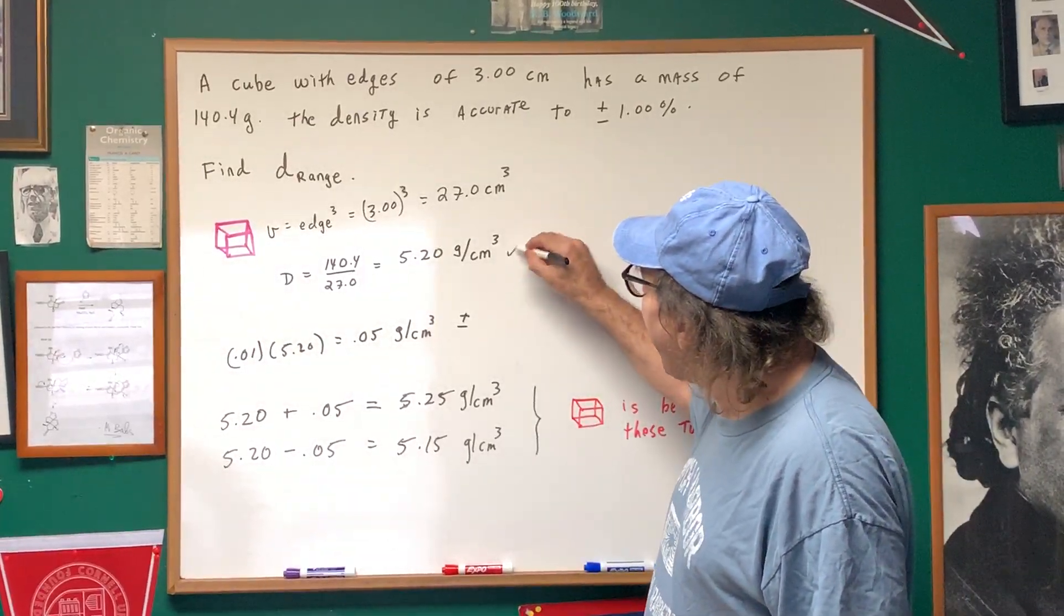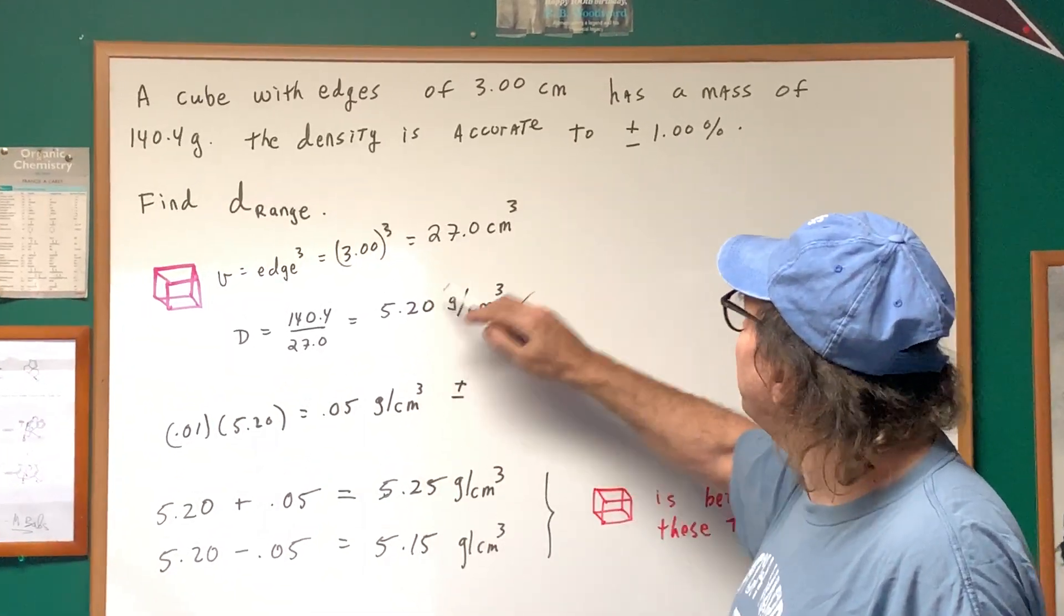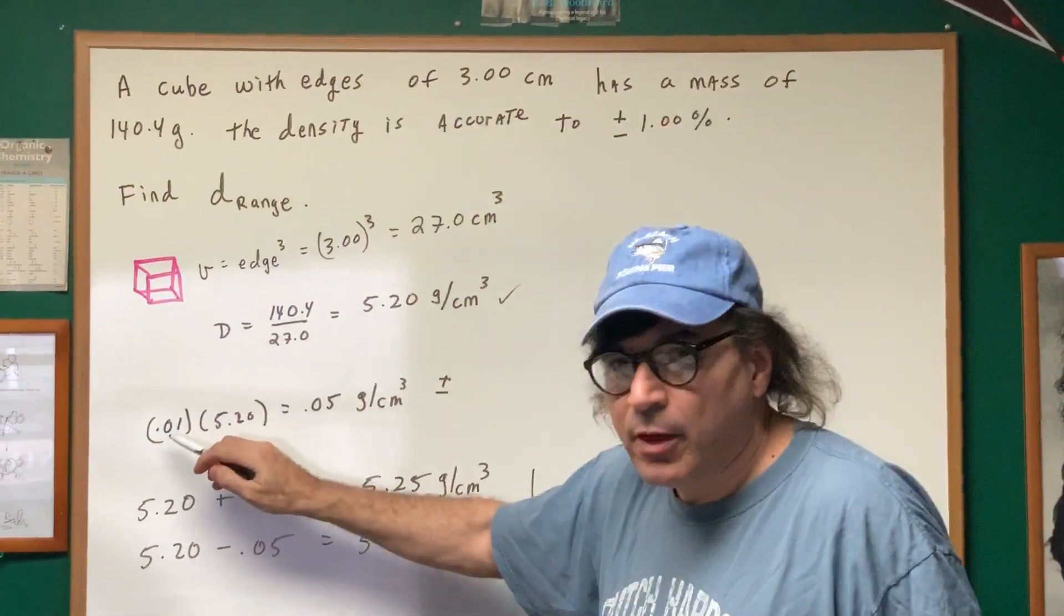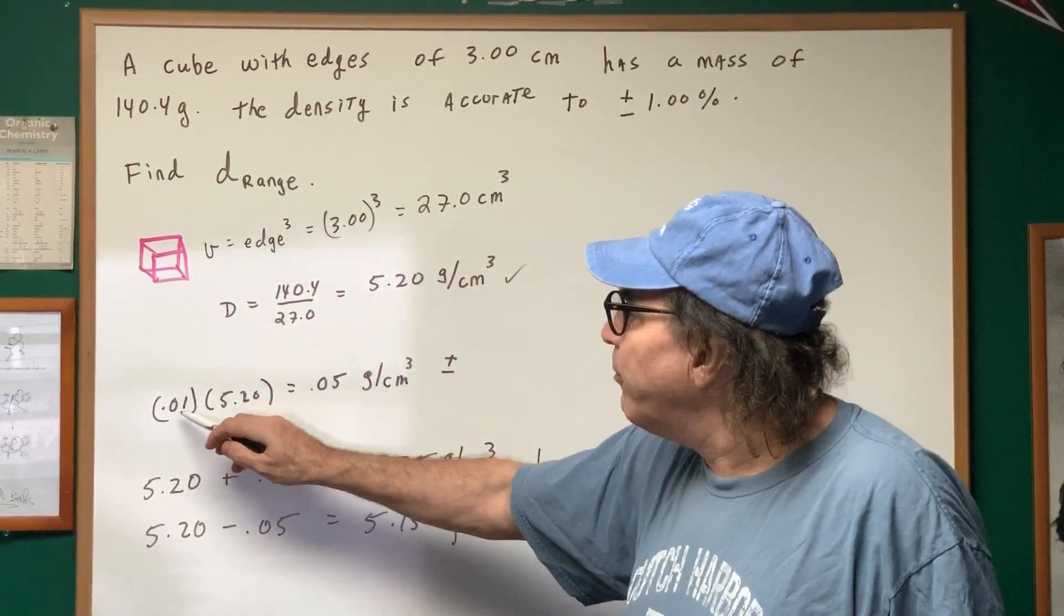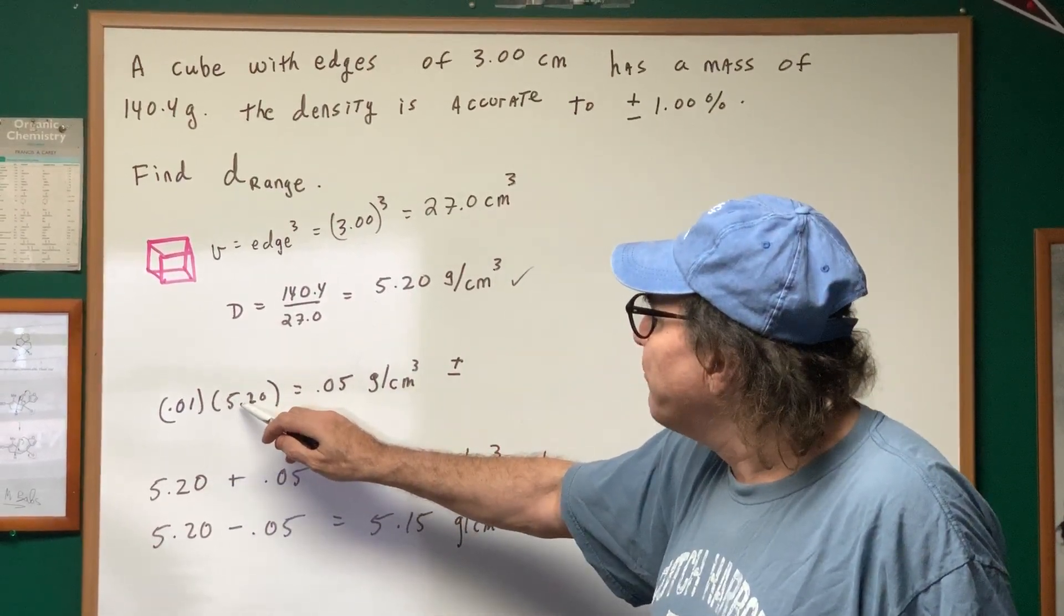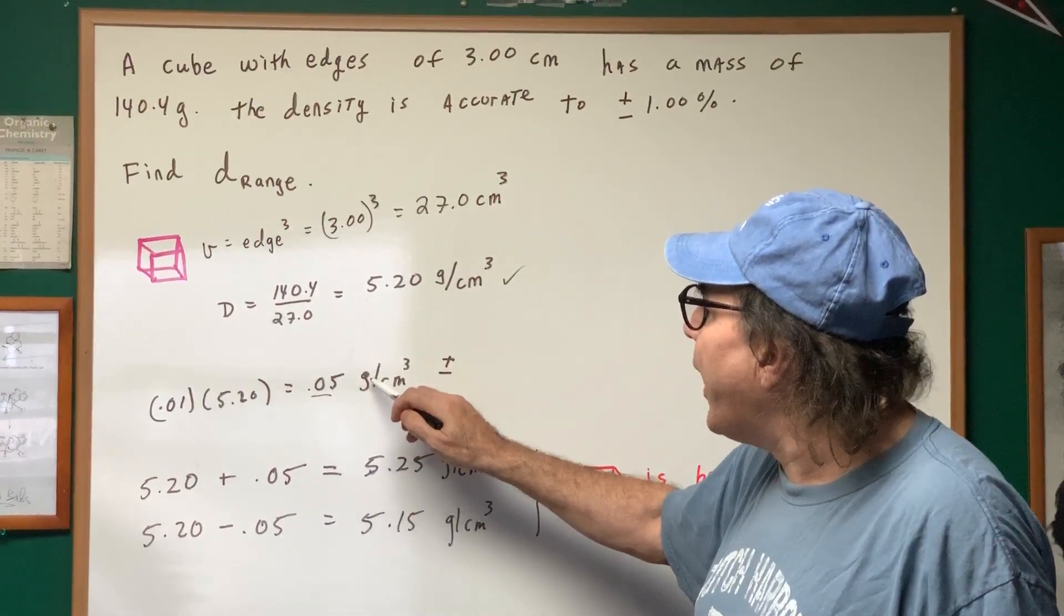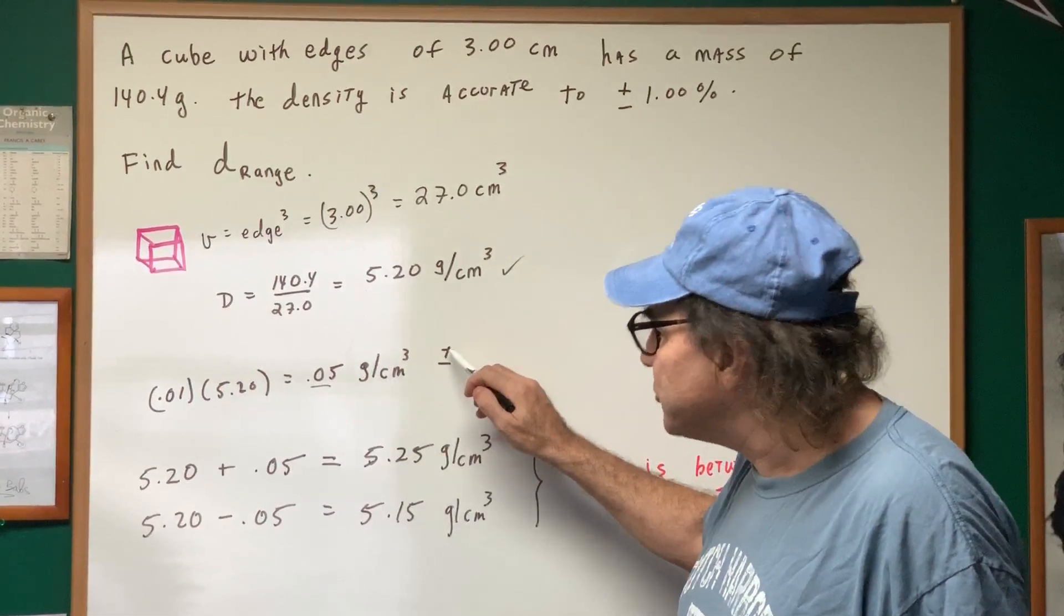All right, hold that out. We know the density, the 5.20, is accurate to 1%. 1% is 0.1. So that means that when you multiply the accuracy by the density, we're going to get 0.05 grams per centimeters cubed, plus or minus.